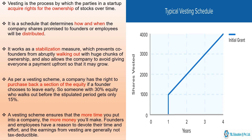The vesting schedule is the schedule that determines how and when the company shares promised to founders and employees will be distributed. We use this schedule because it is a stabilization measure. For example, when you have a company that has successfully acquired funding from startup supporters and corporates, and your company is going well — let's say 50% of the company ownership goes to corporate owners and investors, and 50% remains.